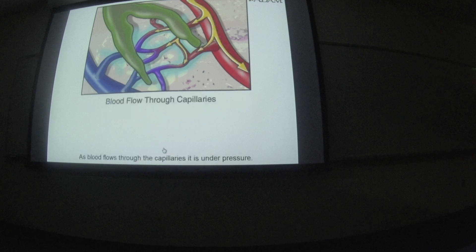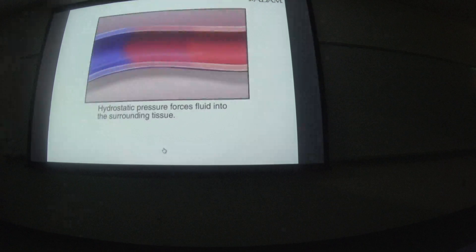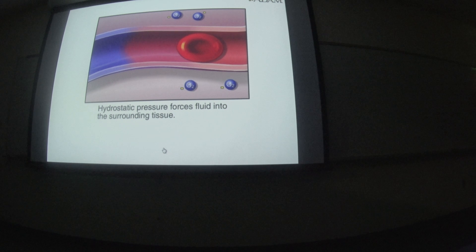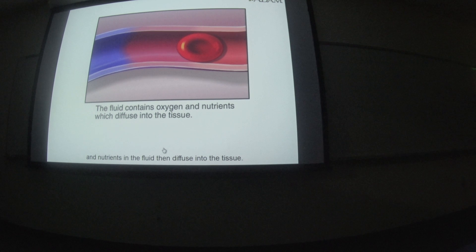As blood flows through the capillaries, it is under pressure. This is called hydrostatic pressure. This pressure forces some of the fluid in the blood out of the capillary into surrounding tissue. Oxygen from the red blood cells and nutrients in the fluid then diffuse into the tissue. Carbon dioxide and cellular waste products in the tissue diffuse back into the bloodstream.